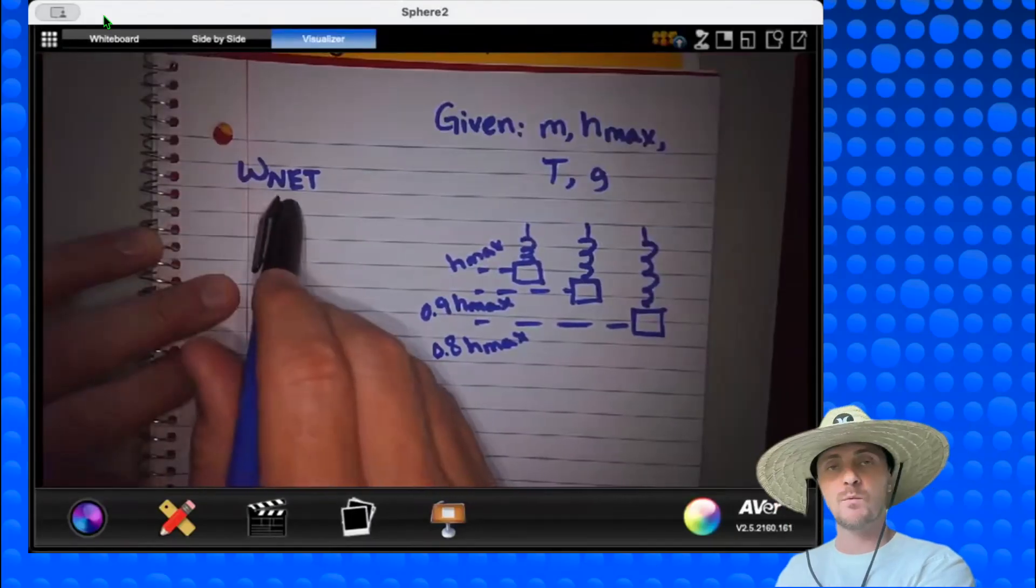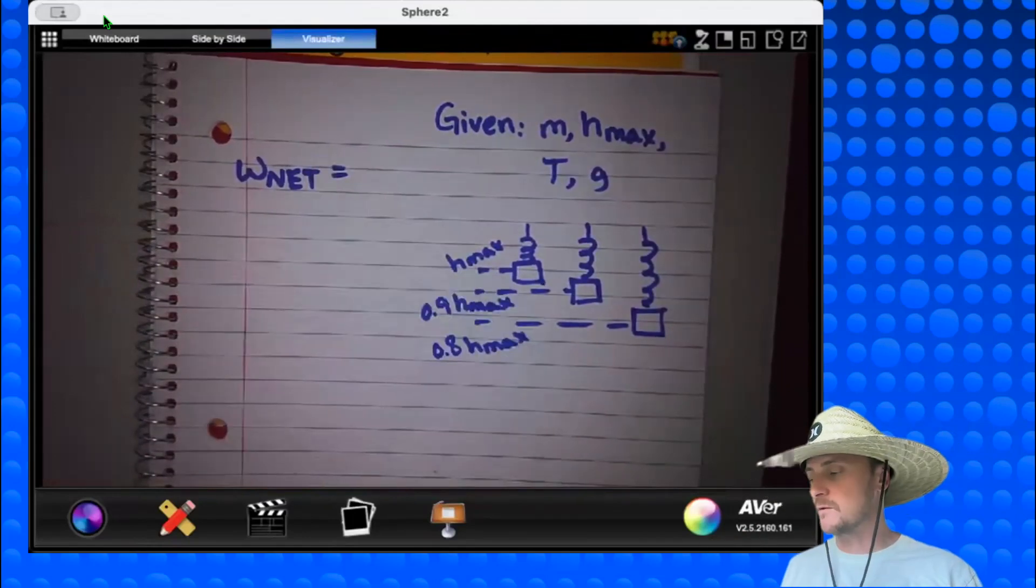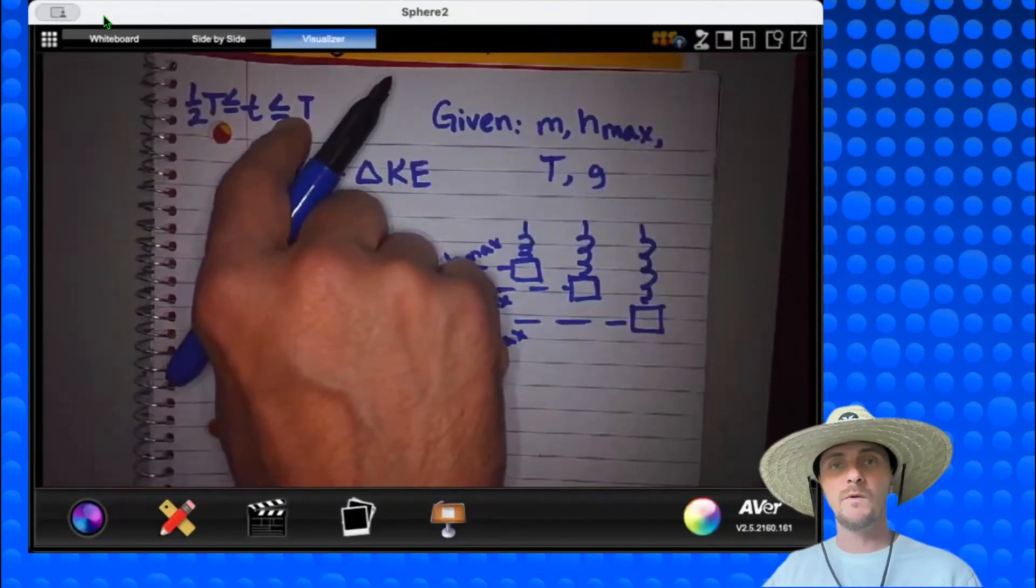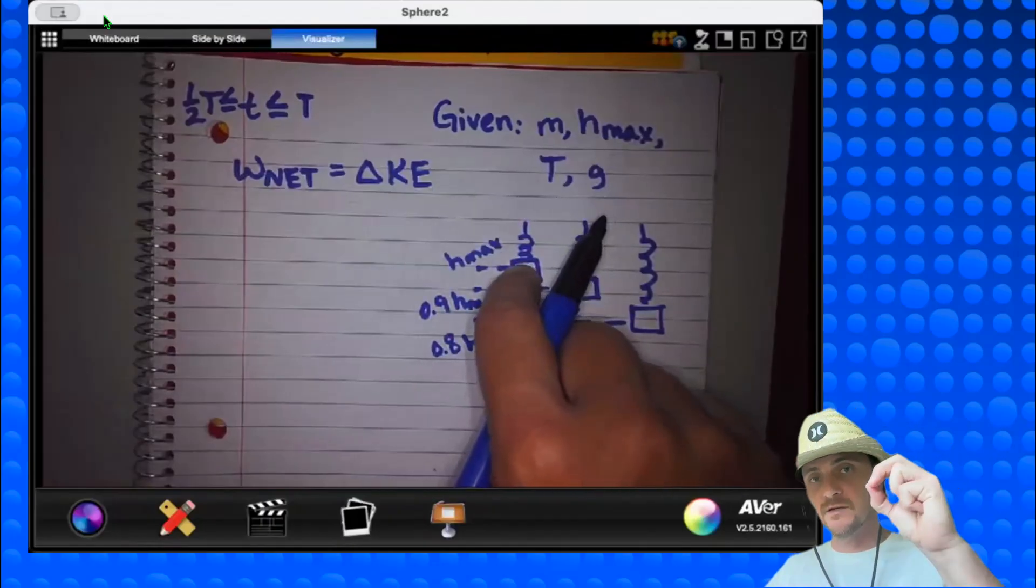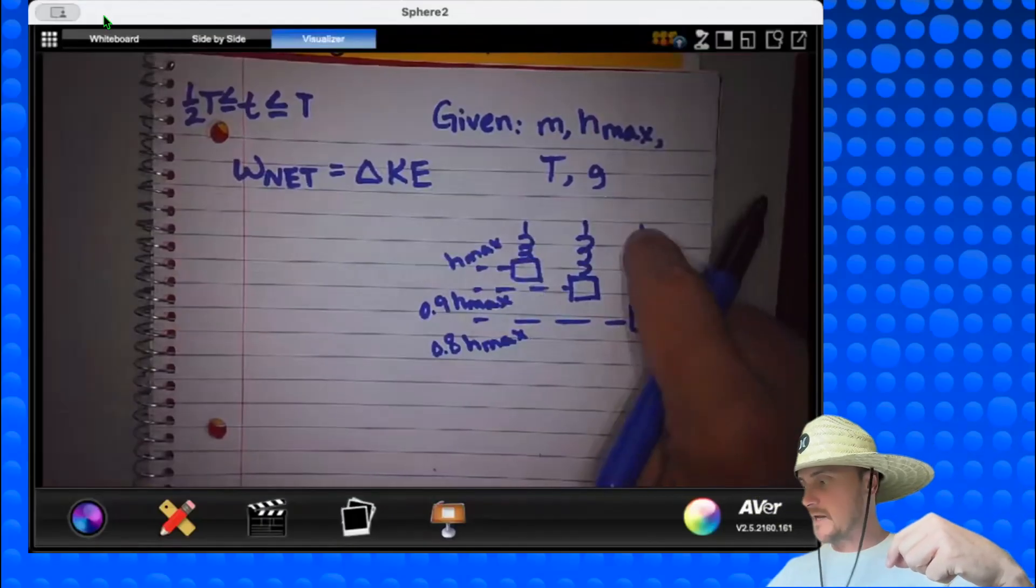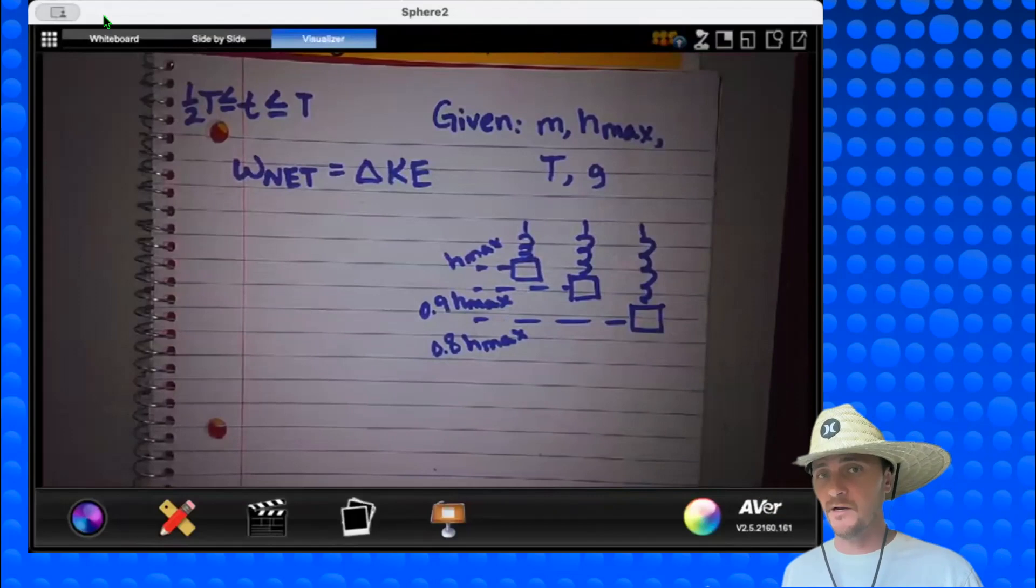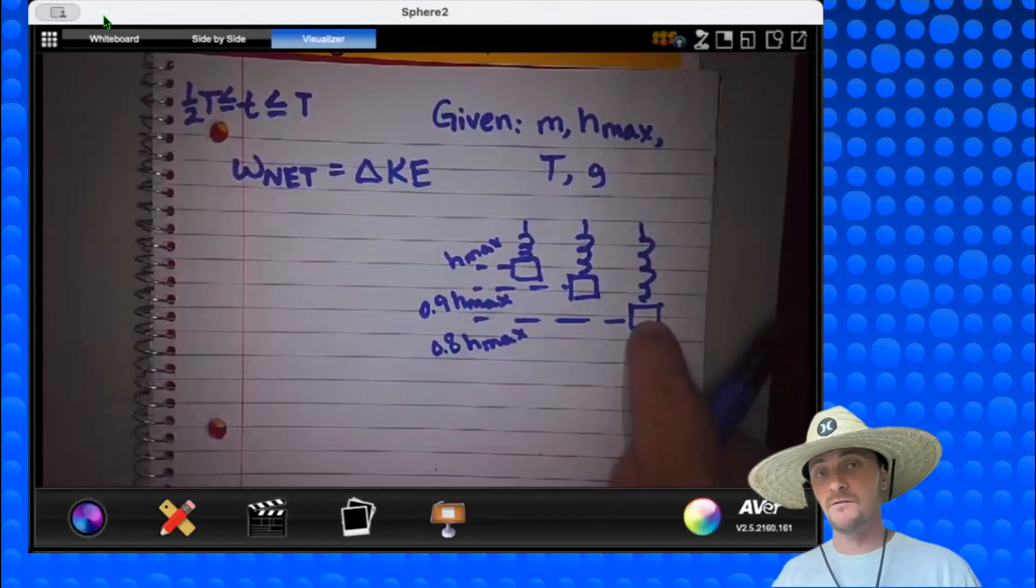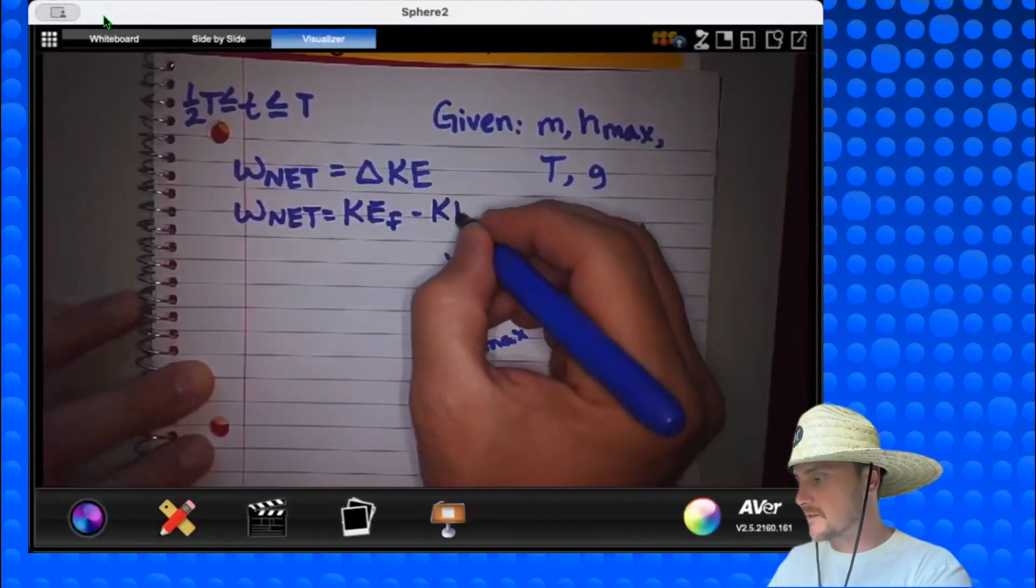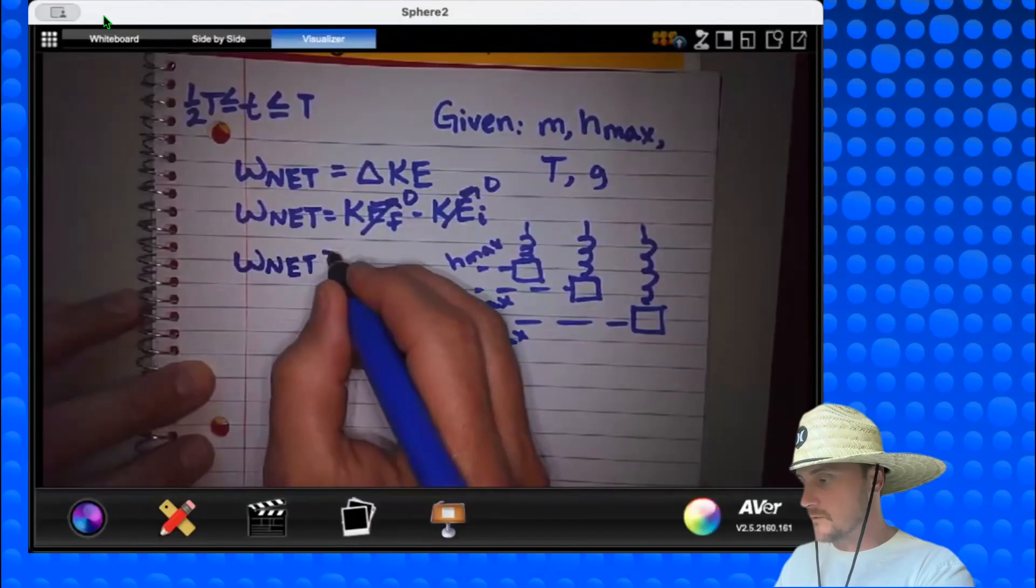And for the second part of part B, they're asking for work net. Now, they told us we could use the force parallel times distance, which we just did. But they also told us we could use the work energy theorem, which is work net equals the change in kinetic energy. So during that time period, what do we know? We know that this is our initial position where our velocity is zero because the system has come to its maximum compression and is about to turn around. And we know at the final position, when it's at its maximum extension, the system has also stopped and is ready to turn around. Then what's my initial kinetic energy and what's my final kinetic energy? It would be zero and it would be zero.